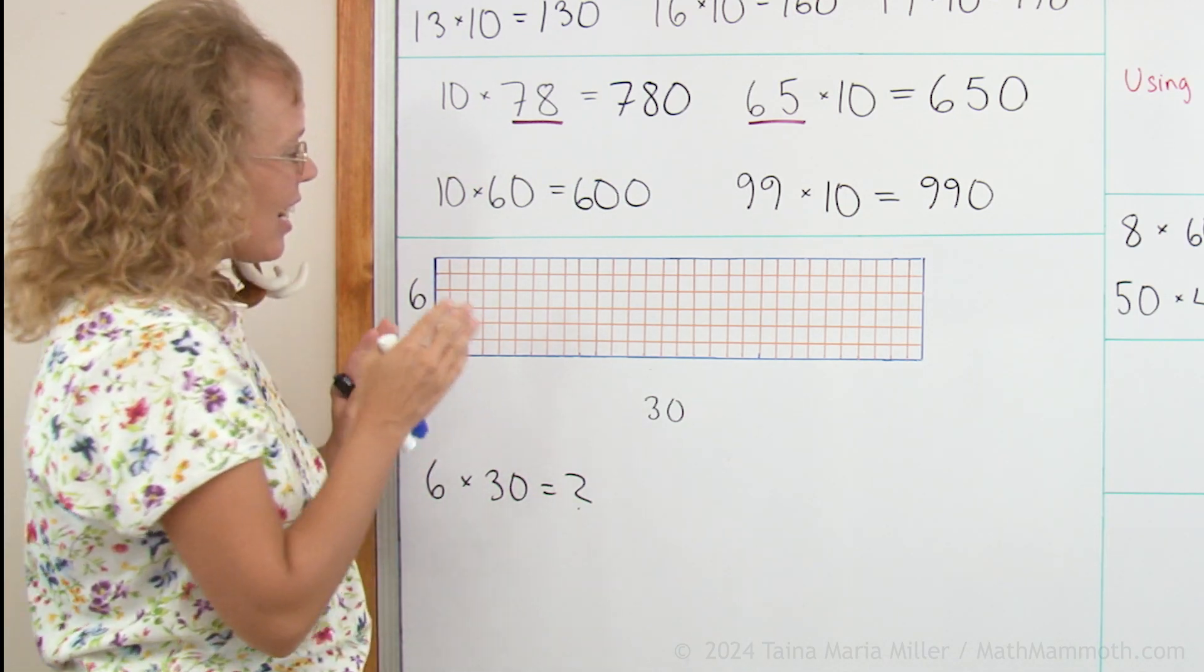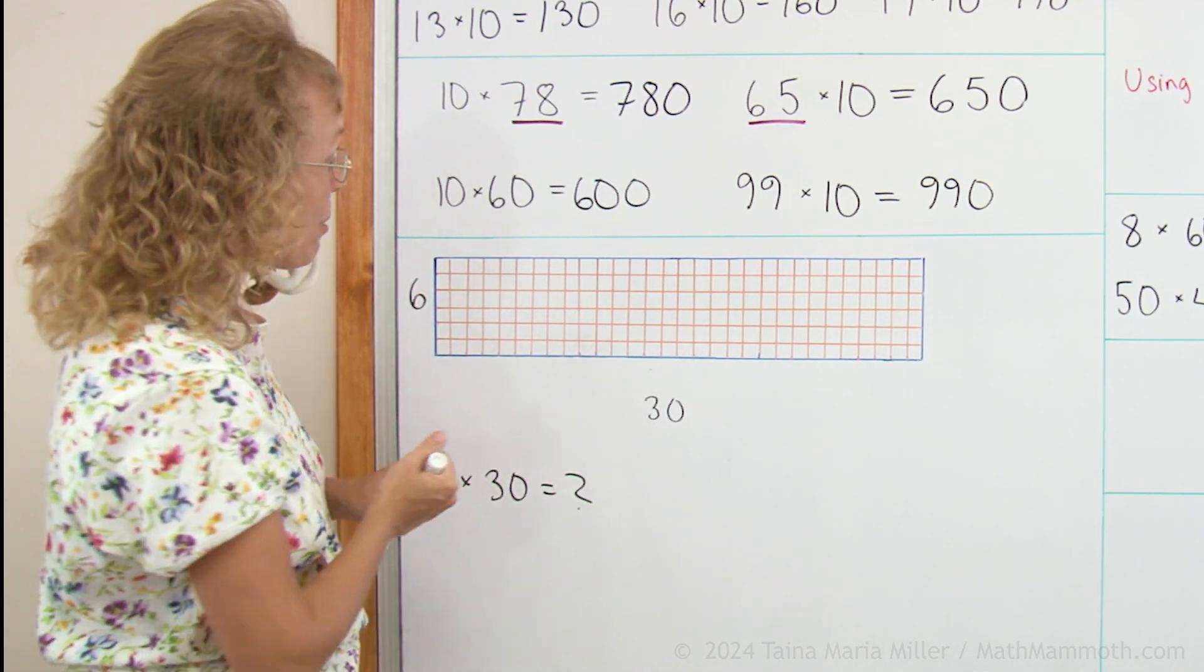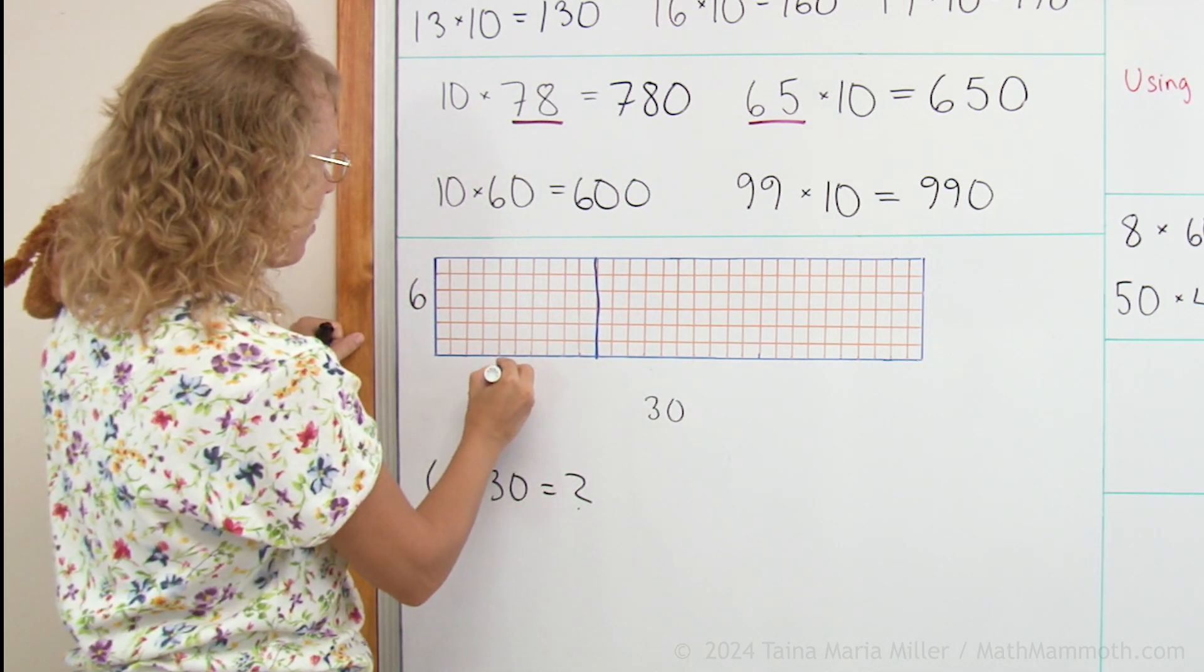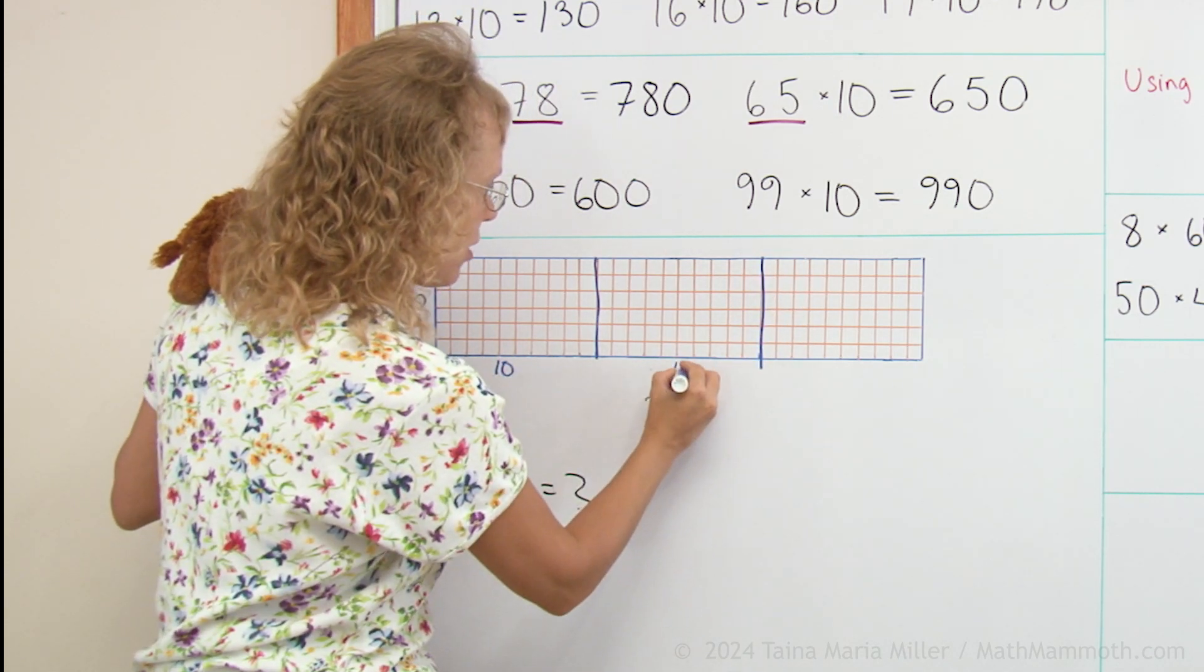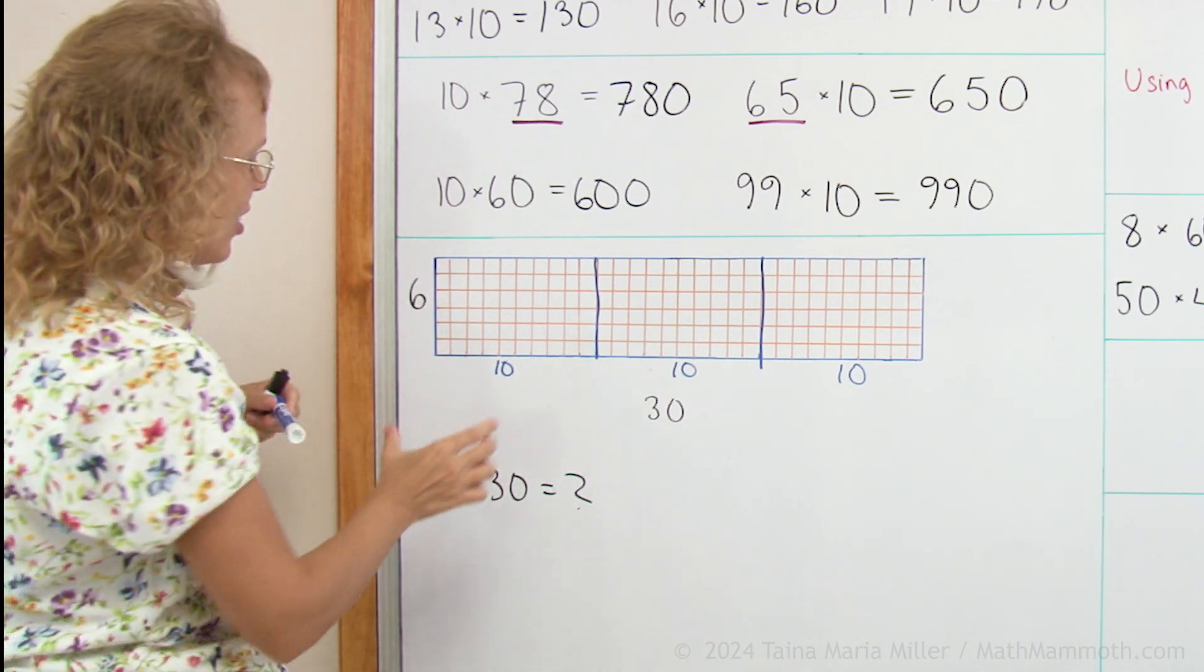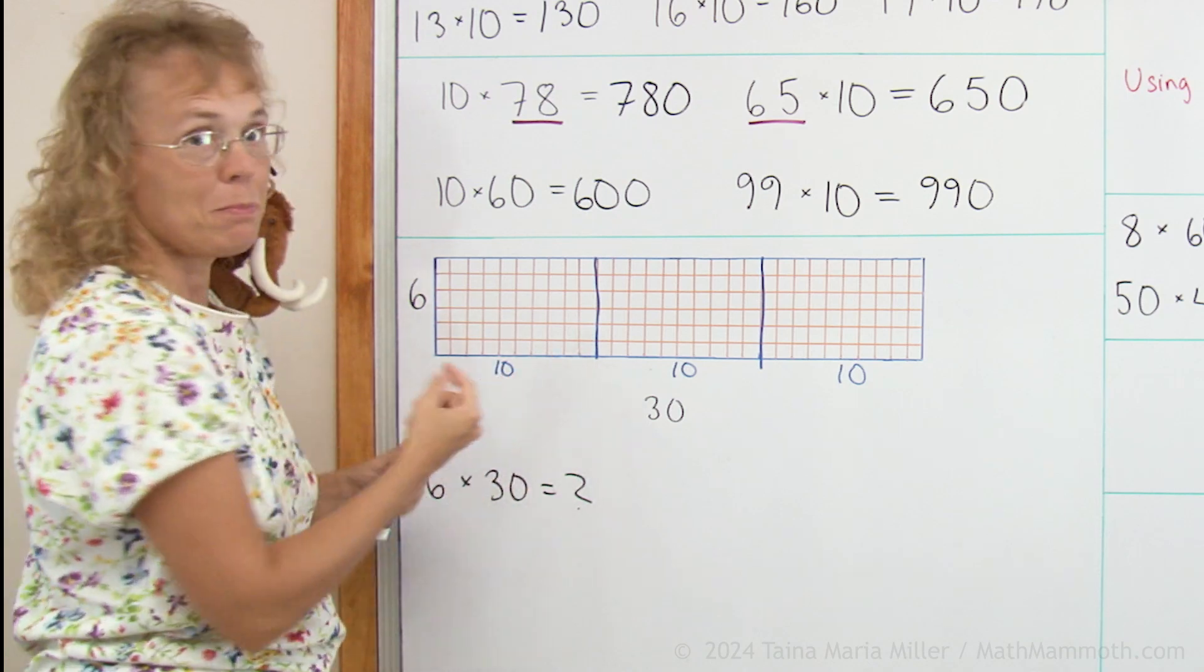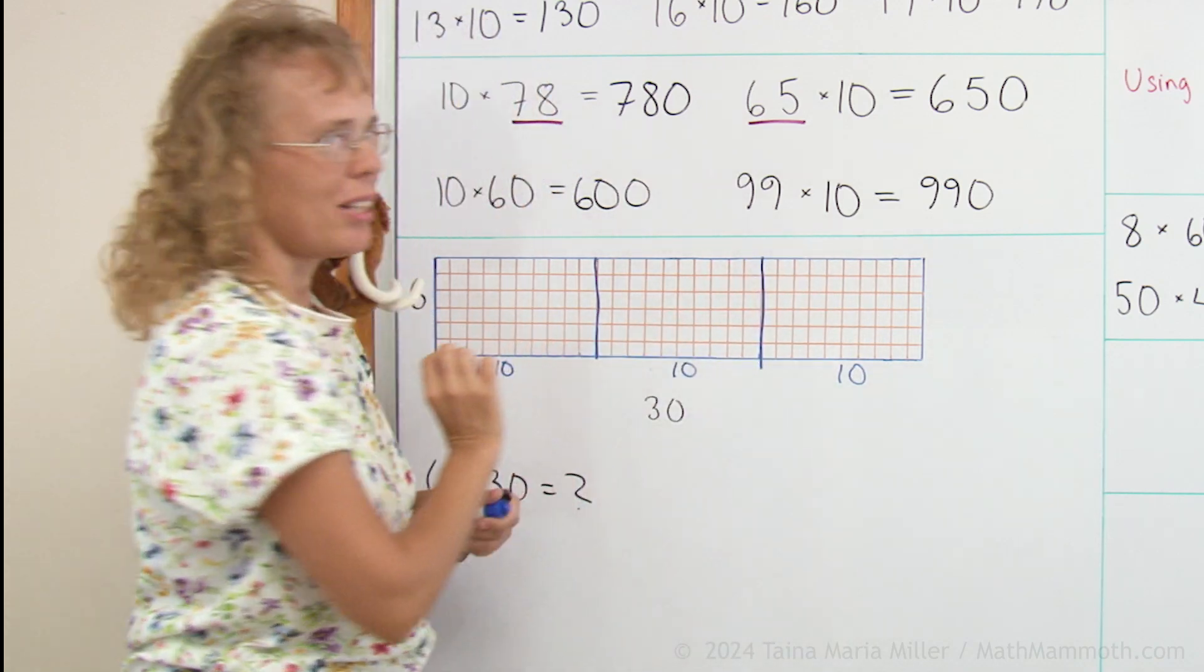And that is that I will divide this big rectangle into parts, into 3 parts, like this. From here, so that I have 10 here. And then here, so there's 10 and 10. So now I have 6 times 10 here, right?